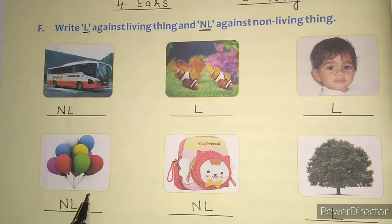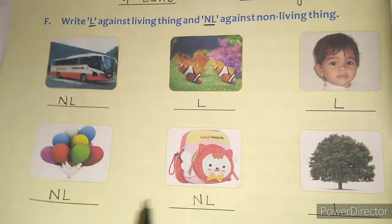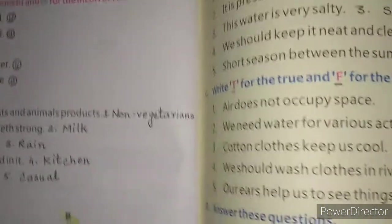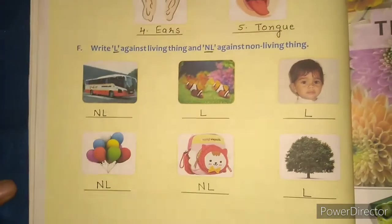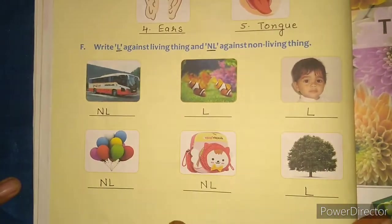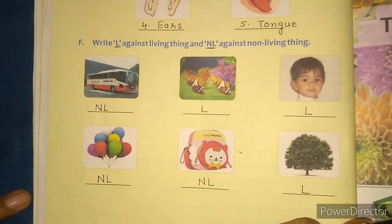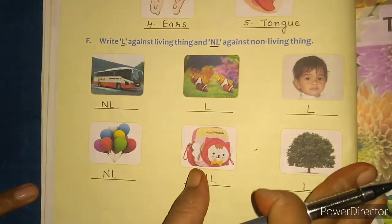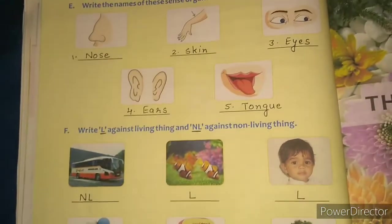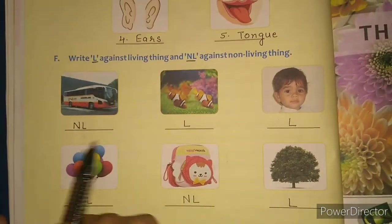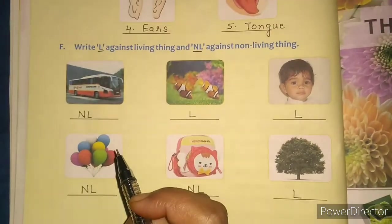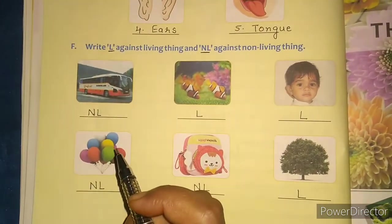So children, you complete exercises C, E, and F in your book — not in your notebook, in this science book. Please do all of this in your book and not in your copy. Okay. Till then, stay home, stay safe. Bye-bye.